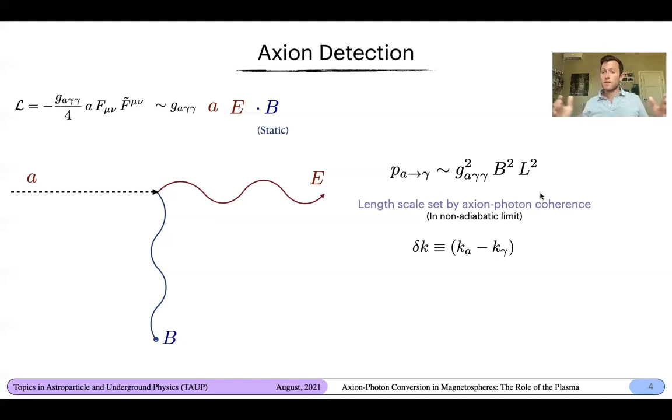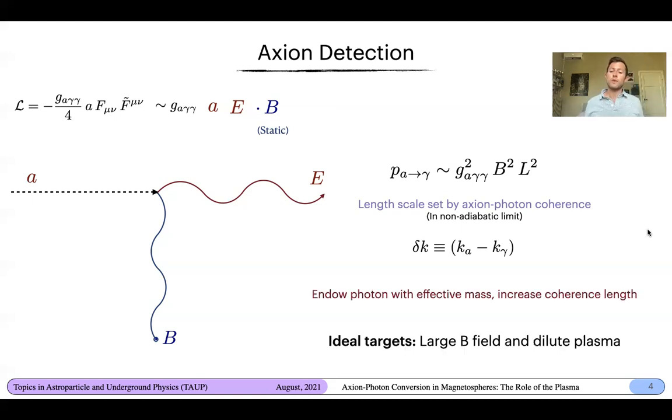Now, if I consider this process taking place in a vacuum with non-relativistic axions, I have a problem. Since axions are non-relativistic, photons are relativistic, this momentum mismatch is large, and this process will be extremely suppressed. I can dramatically enhance the efficiency of this process by going to environments in which I have an effective photon mass. And this is something that naturally takes place in dilute plasmas. Here, you can effectively suppress this momentum mismatch if the effective photon mass matches that of the axion mass, increasing the coherence length and increasing the conversion probability. So this tells us that our ideal targets are those in which you have large magnetic fields and dilute plasmas.